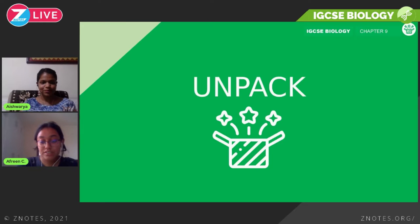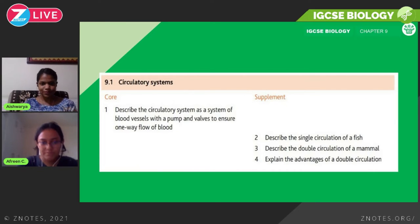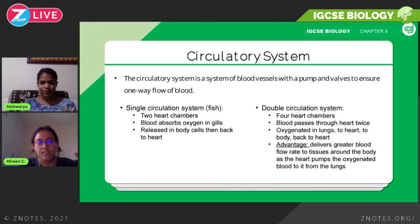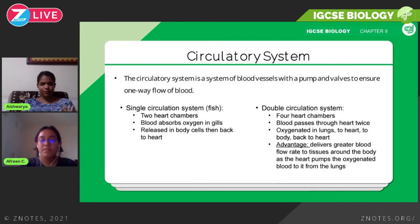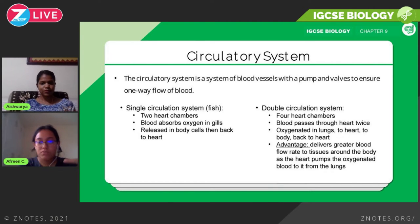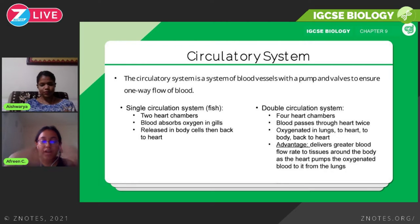The first part is circulatory systems. The syllabus needs you to know what the circulatory system is, the parts of it, and then you need to know about single and double circulation and the advantages of double circulation. The circulatory system is a system of blood vessels with a pump and valves to ensure one-way flow of blood — blood is transported in one direction only.